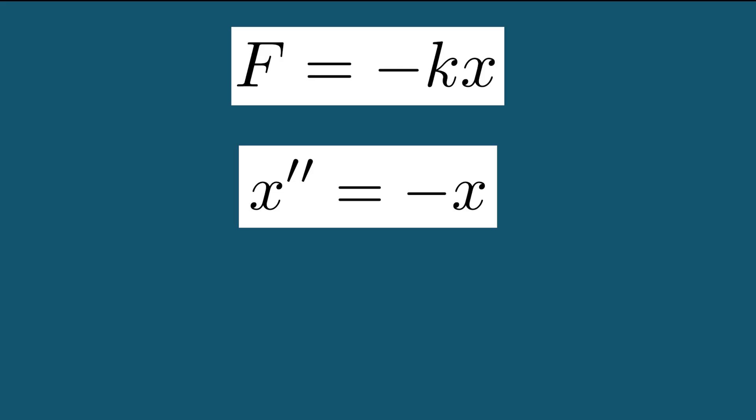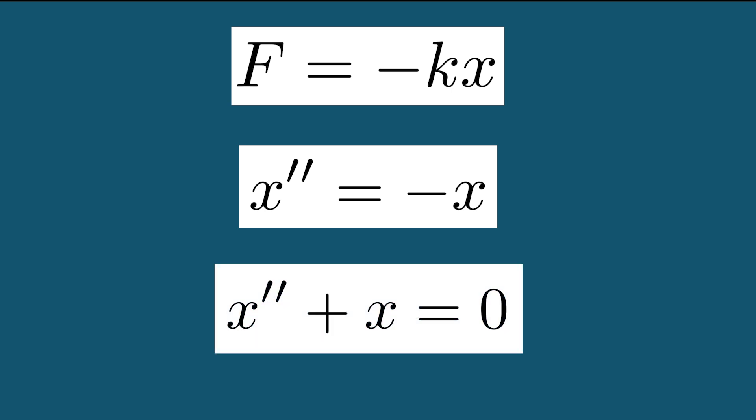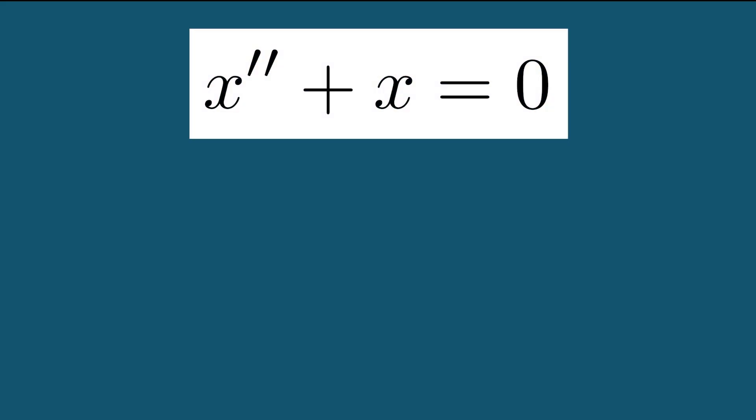Here, x double prime is the acceleration of the mass, or in other words, the second derivative of the position of the mass. We can rearrange the equation to get x double prime plus x equals zero. Now, we have an ordinary differential equation in x, since it relates x to its second derivative, x double prime.